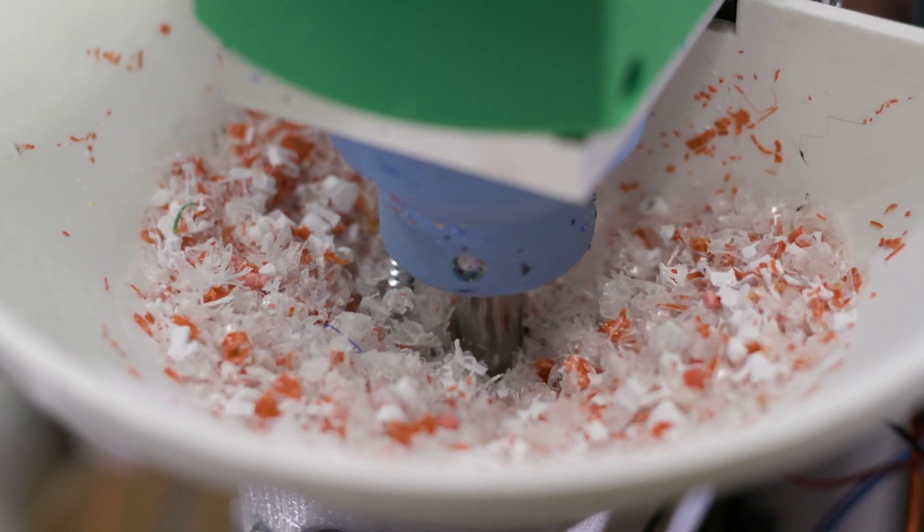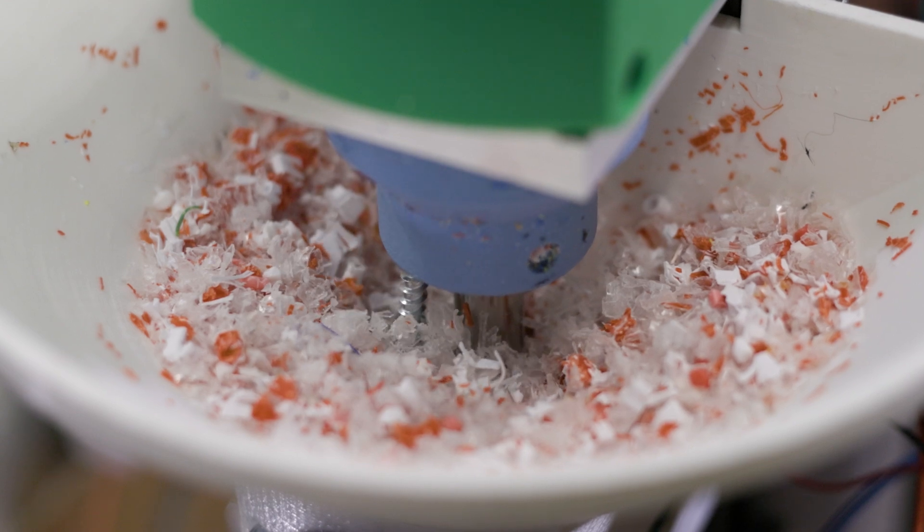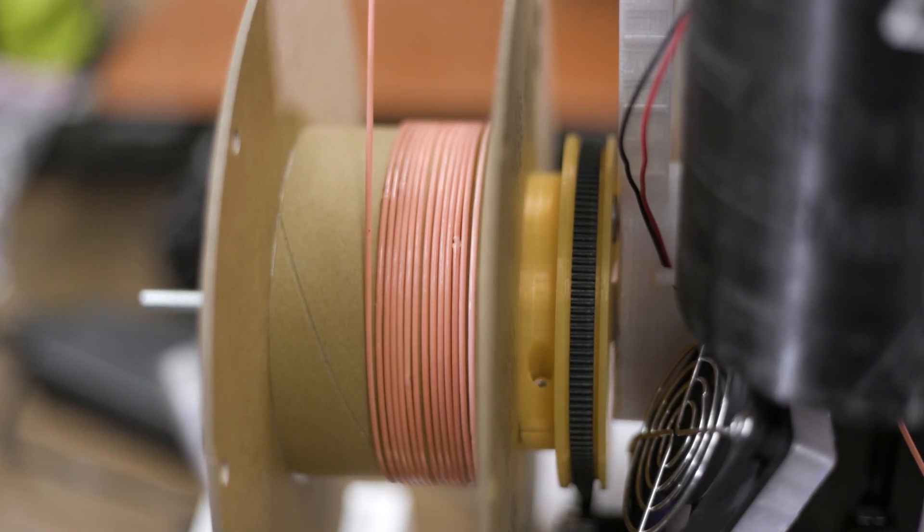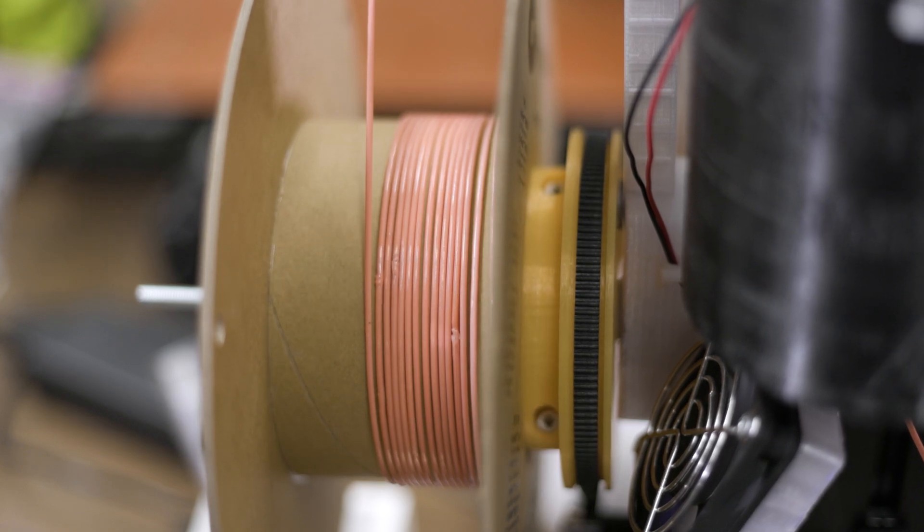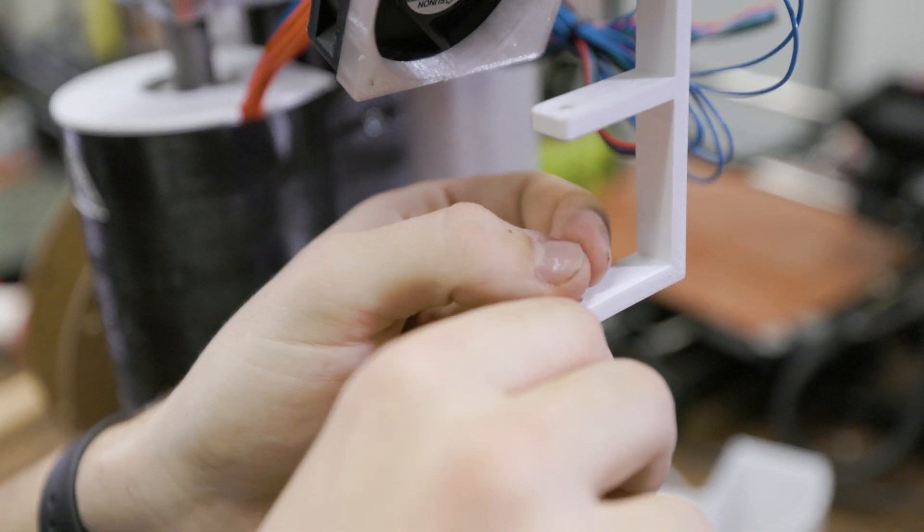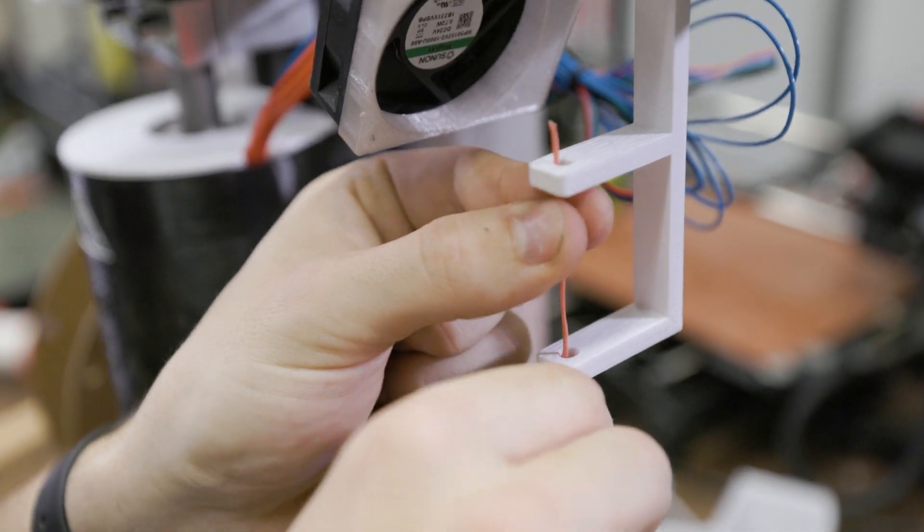And then from there we take it back and put it into the recycling machine on top, into the hopper, and then it will heat it up and melt it and push it down through an extruder, kind of like what a 3D printer does, except it just doesn't print anything. It just instead will cool it off and spool it so we can use it again.